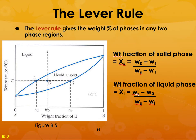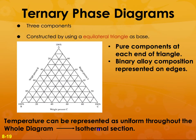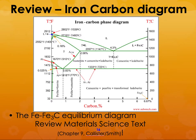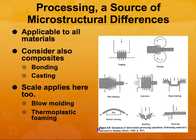The lever rule is the most important aspect of understanding a phase diagram — how much of each phase is present in the microstructure and what is the chemical composition of each phase. We will also give you a flavor of ternary phase diagrams — you won't need to work with them deeply, but it's another level of complexity. Then we will review the iron-carbon diagram and what structures are present.